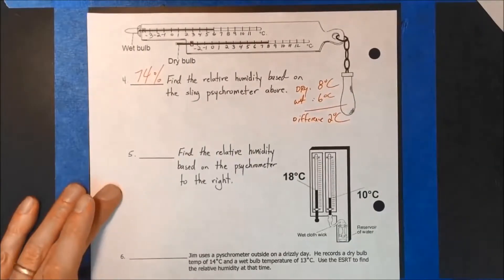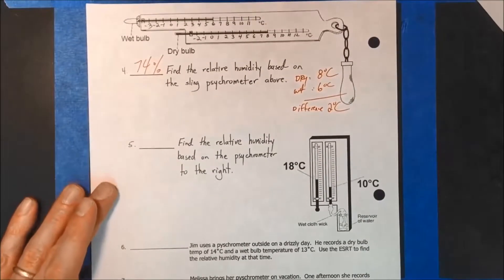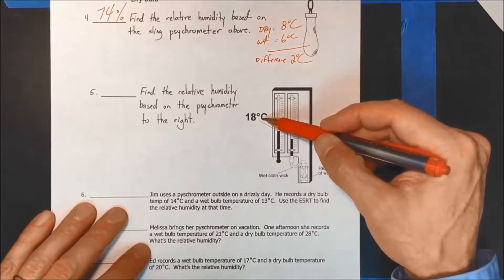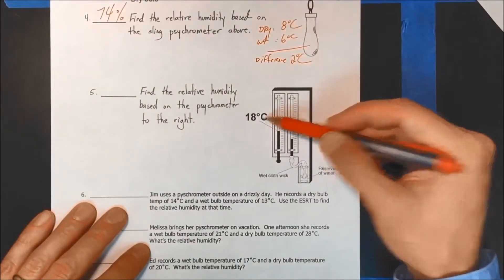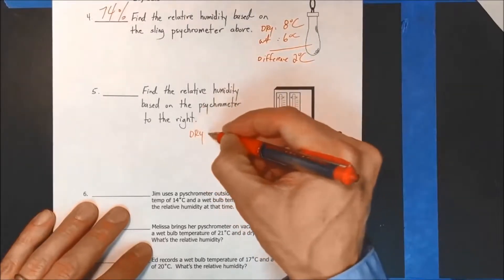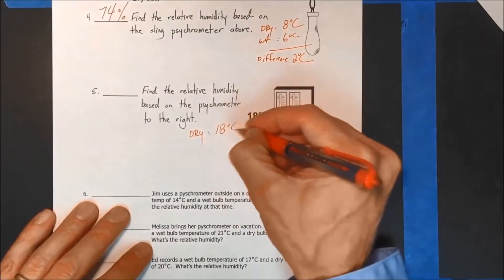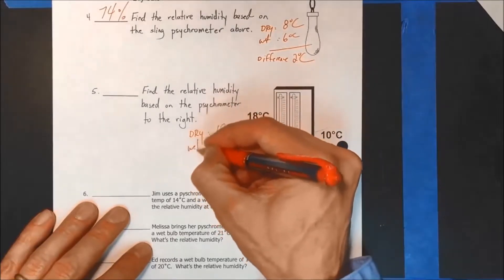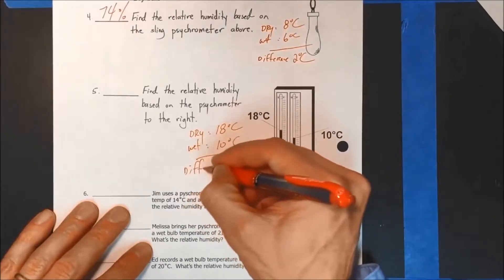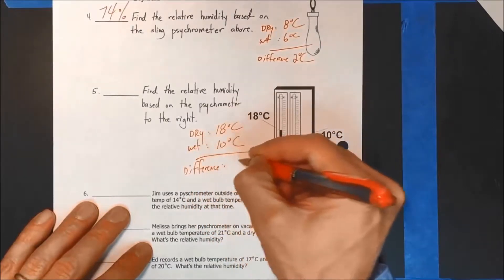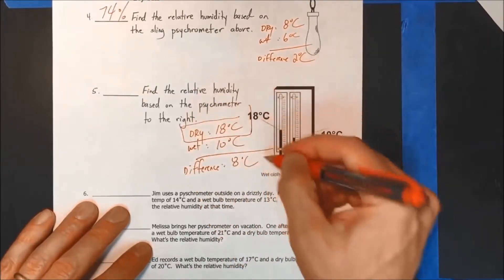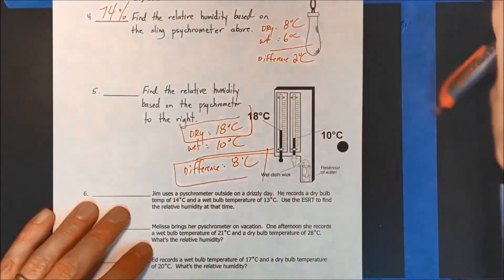Alright, 5. Find the relative humidity based on the psychrometer to the right. Here we go. Similar, it is the dry bulb 18C, wet bulb 10C. Dry bulb, it does help to write them out. You should be writing them out of 10 degrees C. Just to remember, always get the difference. It's 8 degrees C. Dry 18 is what I'm after. Dry 18, difference of 8 degrees C. Let's do this. Another reference table page right here.